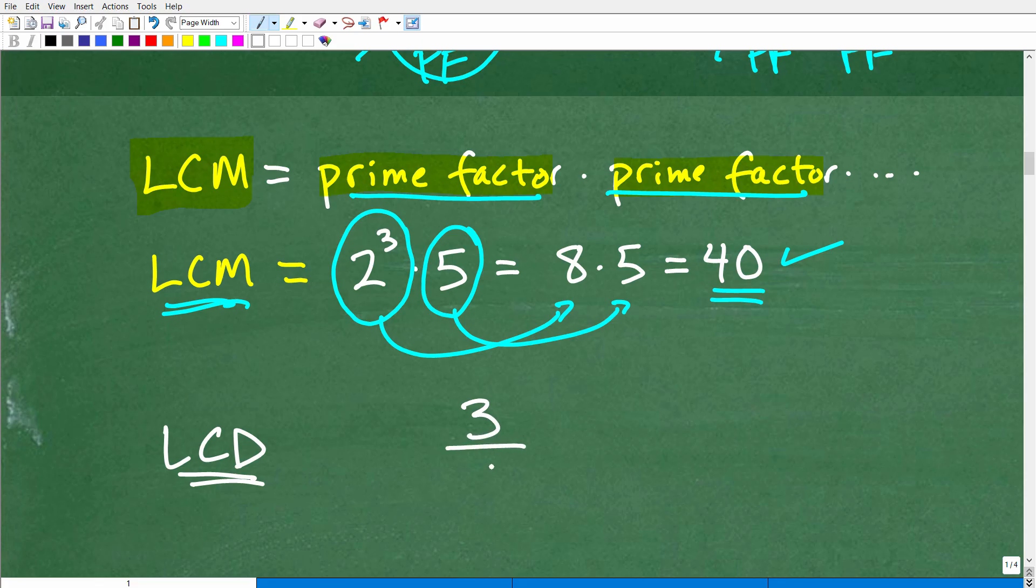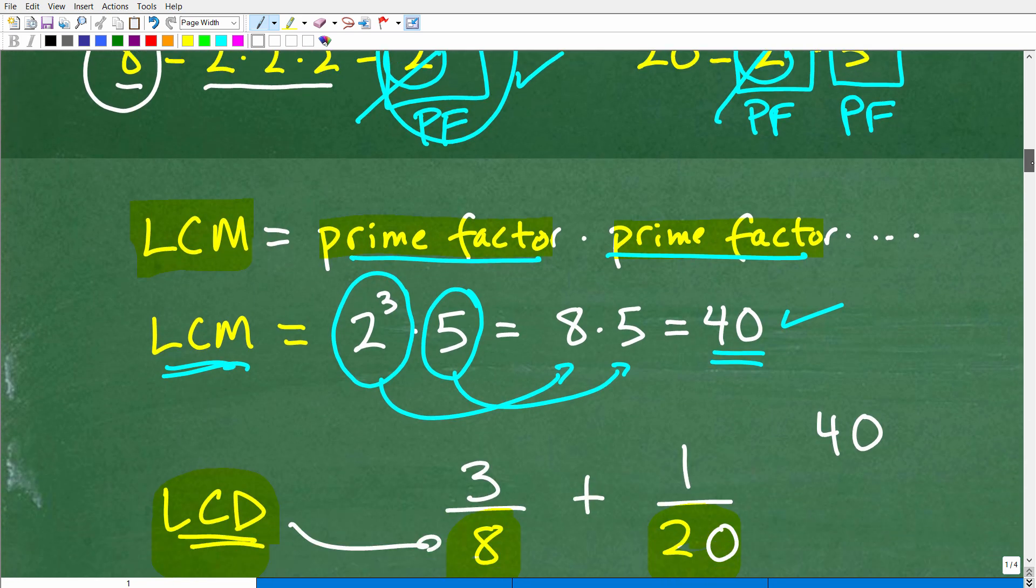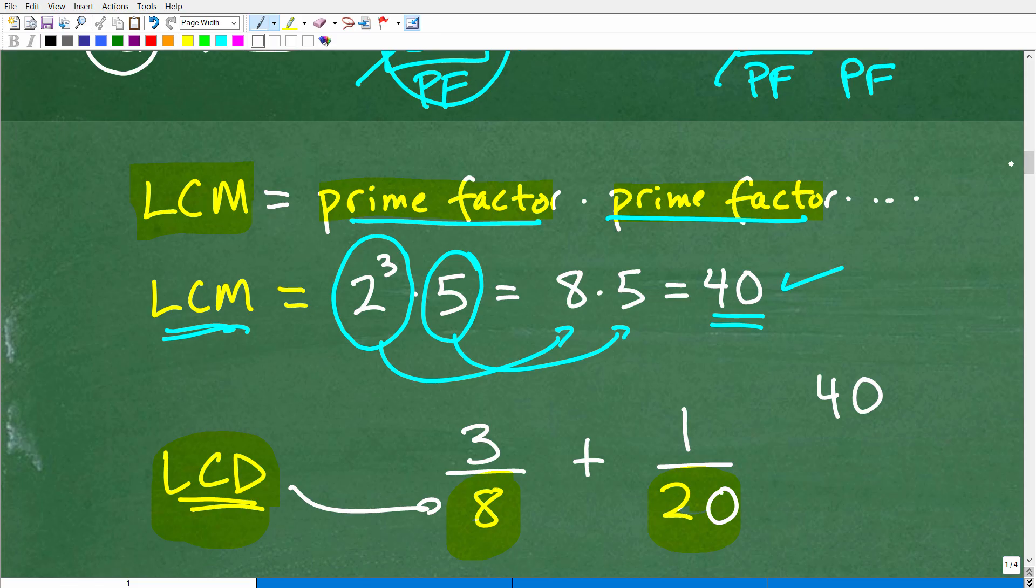So if I had like 3/8 plus 1/20, and I wanted to find the LCD, the LCD is 40. You might be able to kind of see this easy in terms of looking at this as fractions, but the LCD is the LCM. These numbers here, if I'm finding the LCM of the denominator, that is in fact the lowest common denominator. But this little procedure that I showed you here by prime factoring, this comes into play even in algebra when we're dealing with variable expressions. It's really important that you understand what the LCM is and its role in fractions as the LCD.